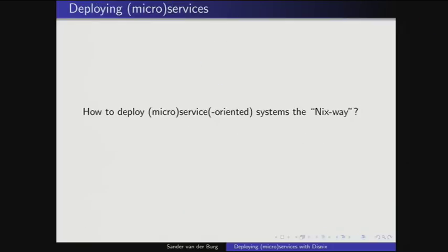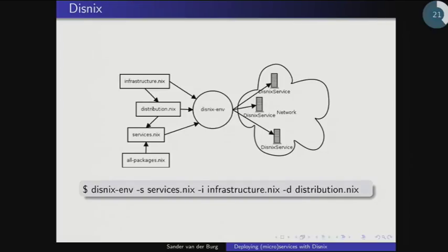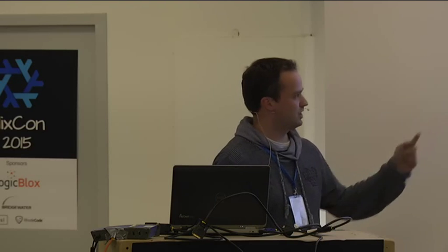How can we deploy a microservice architecture the Nix way? That's where Disnix comes in. In Disnix you write three kinds of models: a services model describing what components the system consists of, their dependencies, and how to build them; an infrastructure model describing which machines are available and their properties; and a distribution model mapping services to machines. Running a single command line instruction suffices to execute all deployment activities.